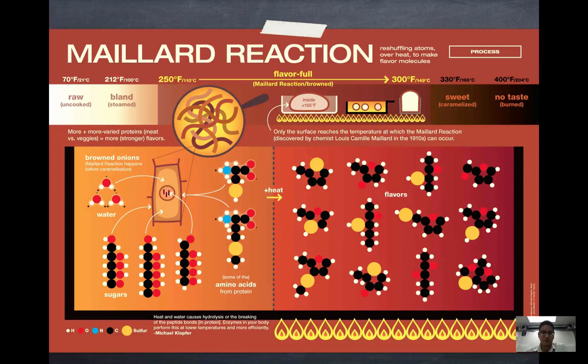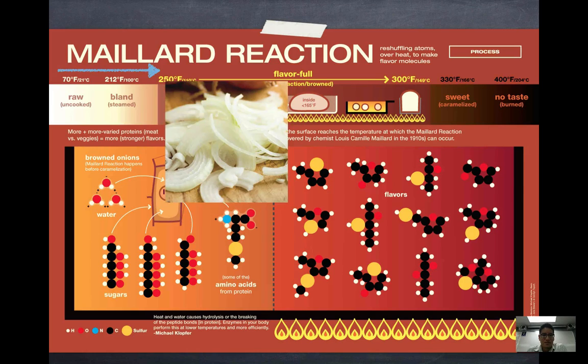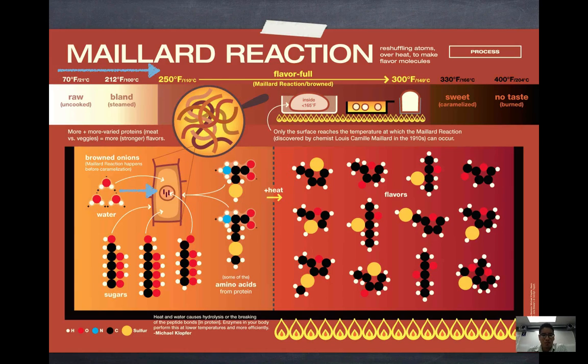Alright, so in this short video, we're going to be highlighting the Maillard reaction that's referenced in the reading that you have. So one of the best examples to use to explain the Maillard reaction is cooked onions, or in this case right now, raw onion. An onion at normal room temperature is made up of water, sugars, and amino acids.